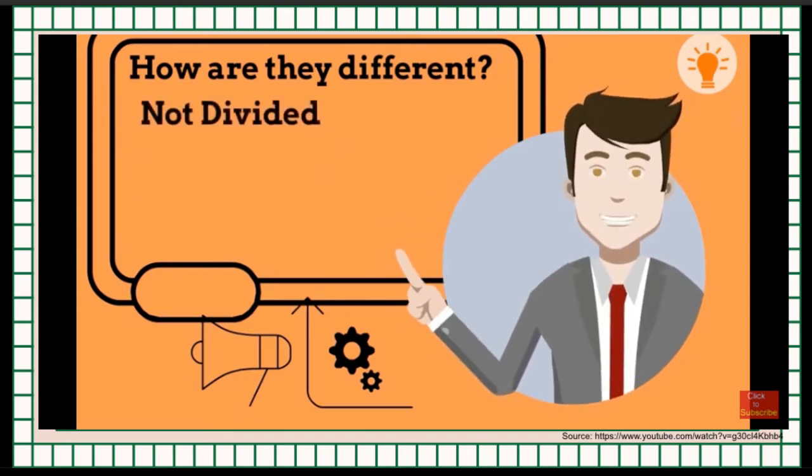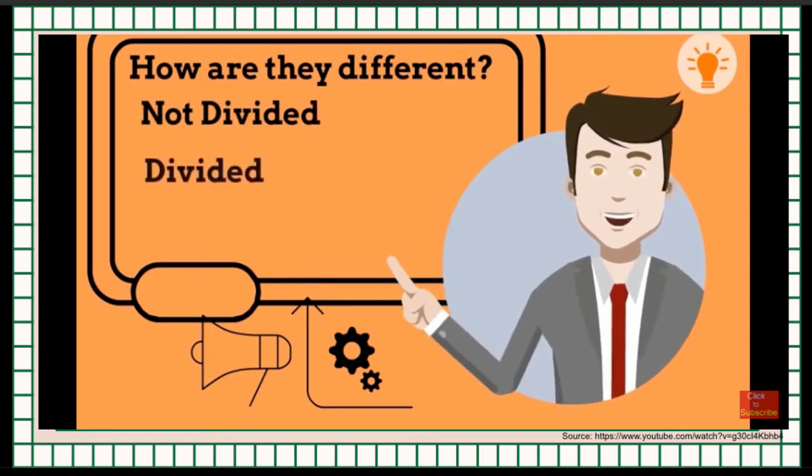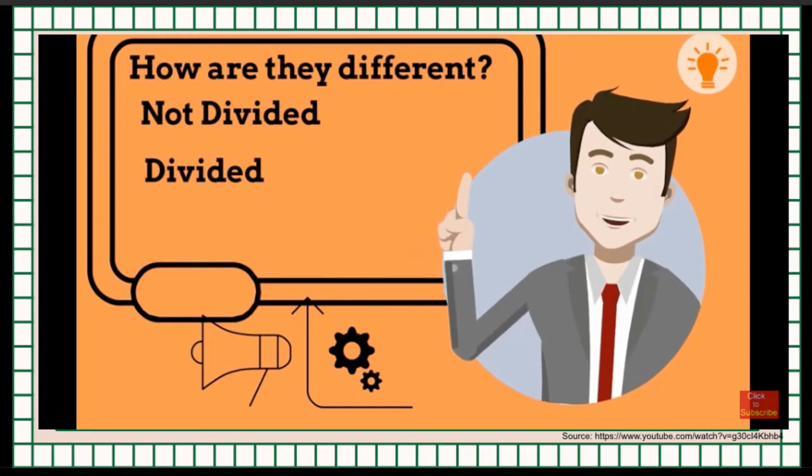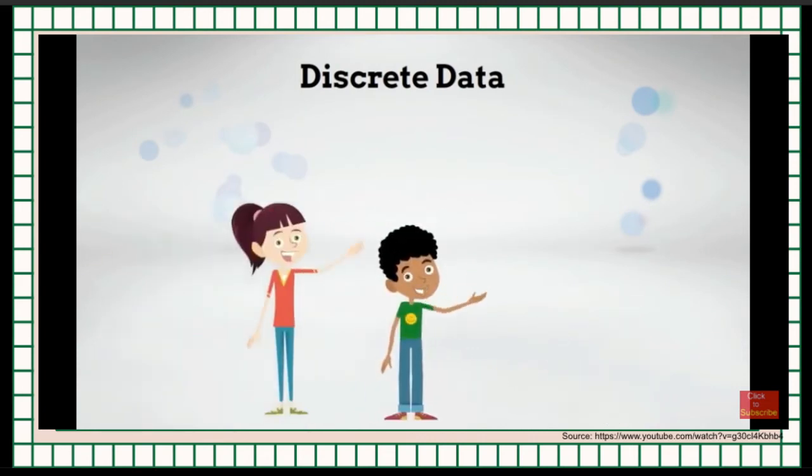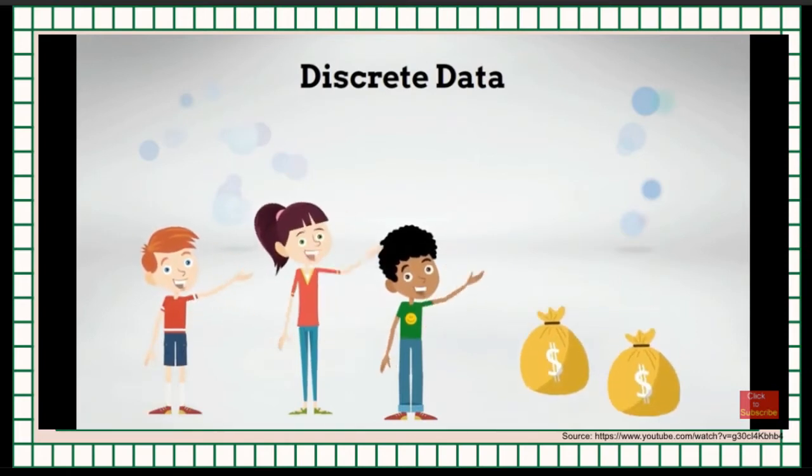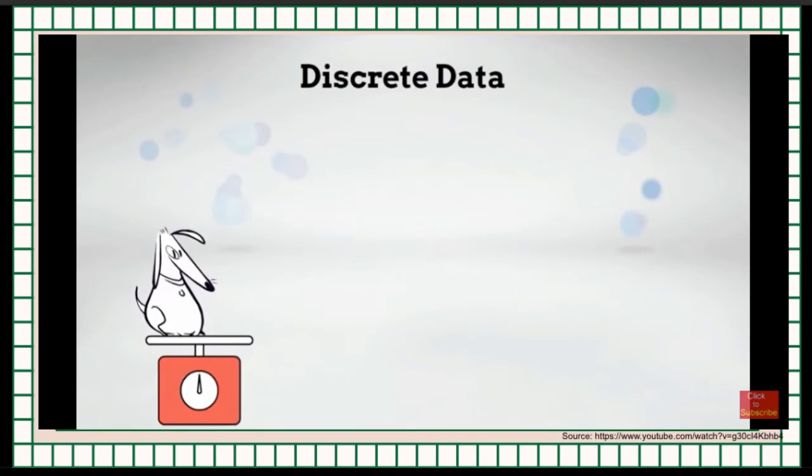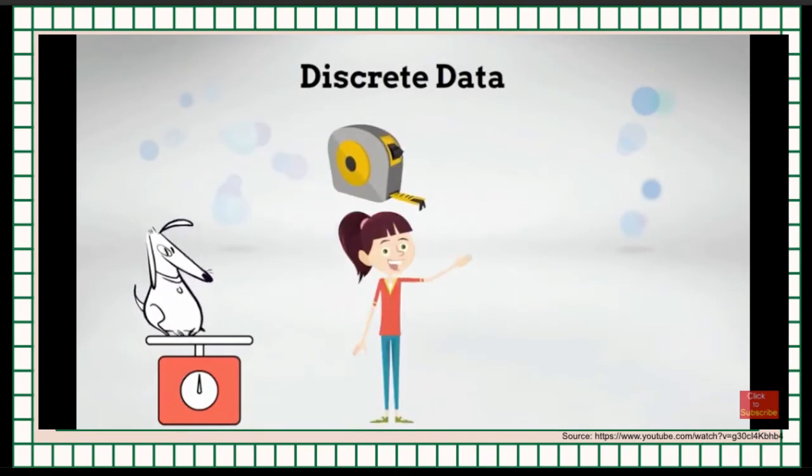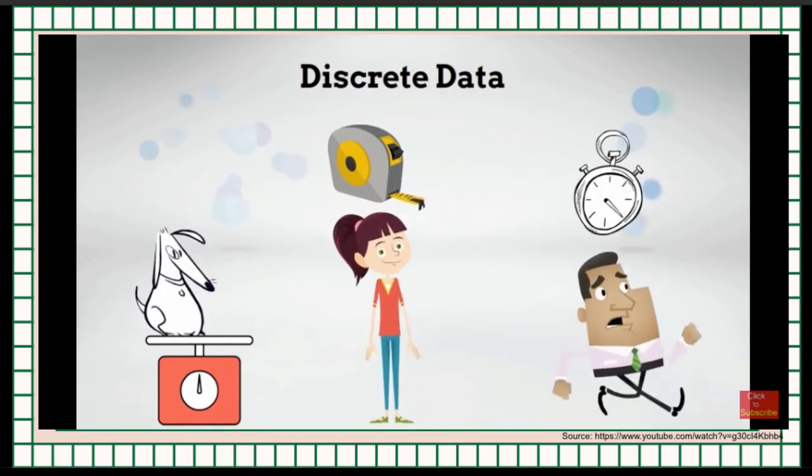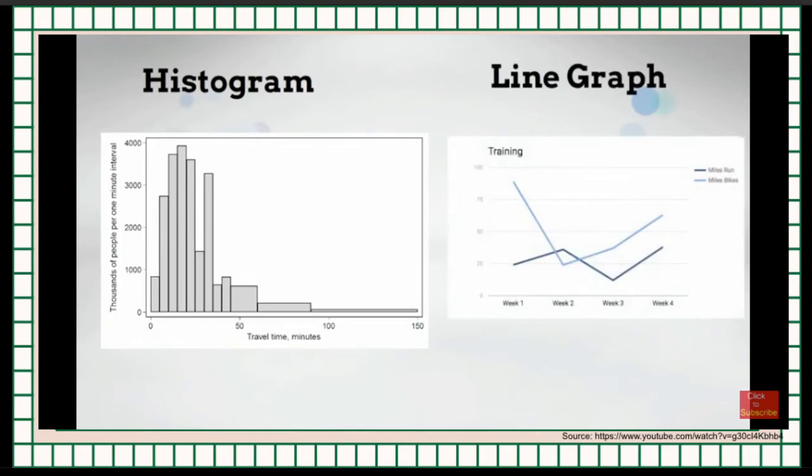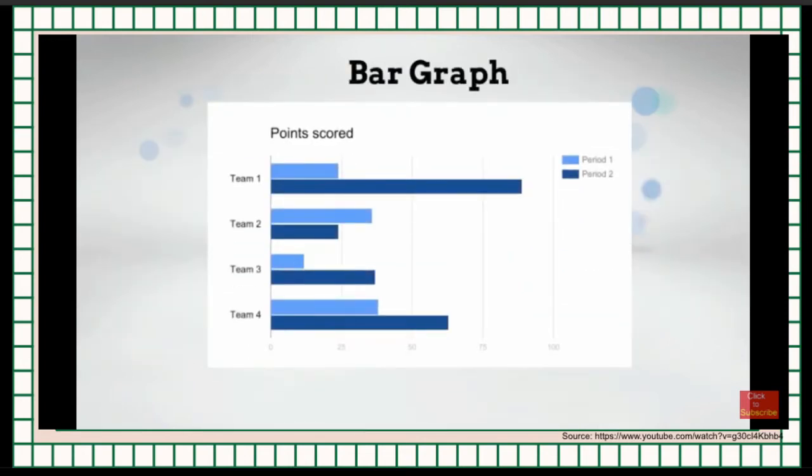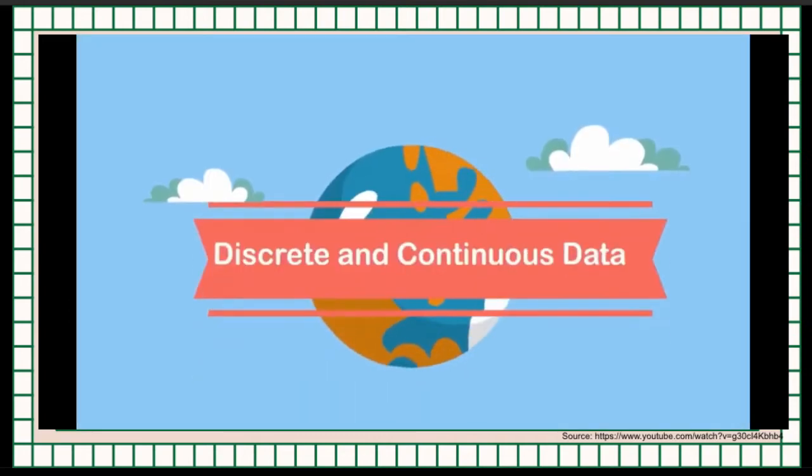Discrete data cannot be divided. It is distinct and can occur in a certain value, while continuous data can be divided infinitely. Let's have an example. We have the number of dogs, the number of students for discrete data and the amount of money, the number of children a couple decide to have. For continuous, we have the weight of the dog, height of the student, and time it takes to run for a mile. Continuous data can be measured by histogram or line graph, and discrete data can be represented by a bar graph.